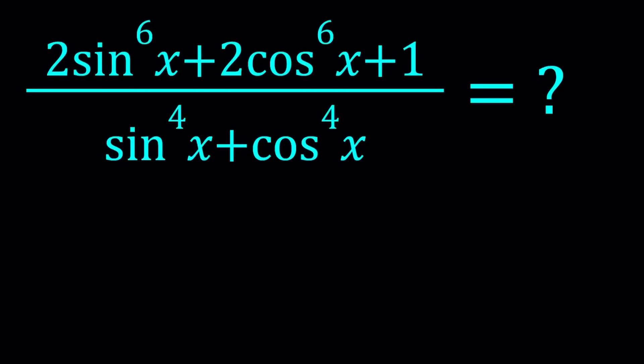Hello everyone. In this video we're going to be simplifying a trigonometric expression. We have 2 times sine x to the 6th power plus 2 times cosine x to the 6th power plus 1, and that is divided by sine x to the 4th power plus cosine x to the 4th power.